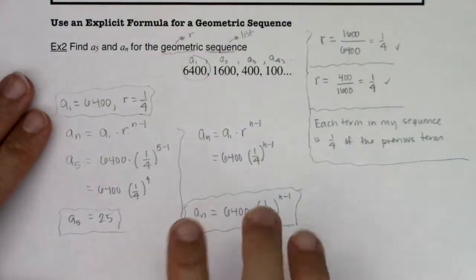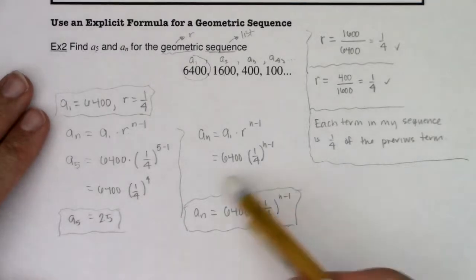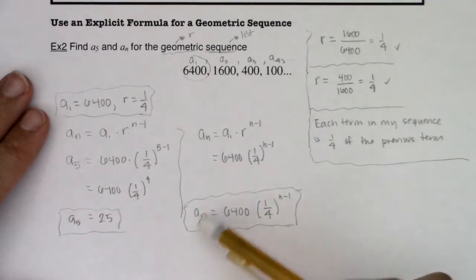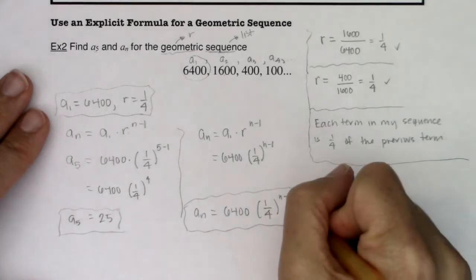Now, personally, like arithmetic sequences, I would have found this first and then I would have just plugged in n equaling 5. I think it's always, for me, I like finding the general term, the explicit formula first and then plugging in the n value.